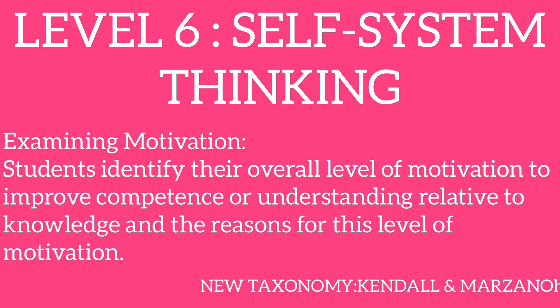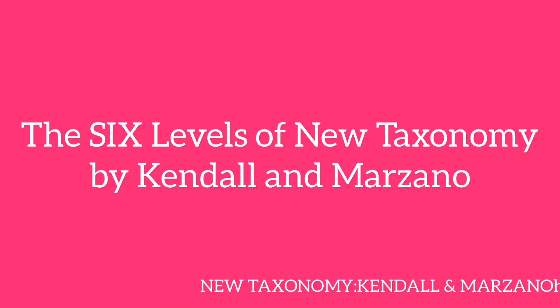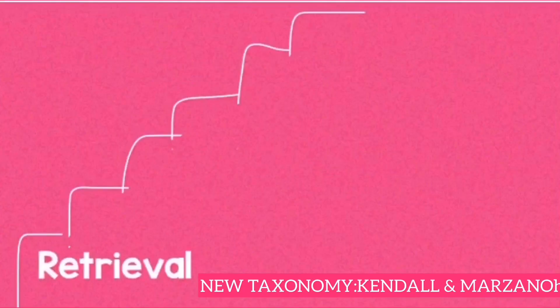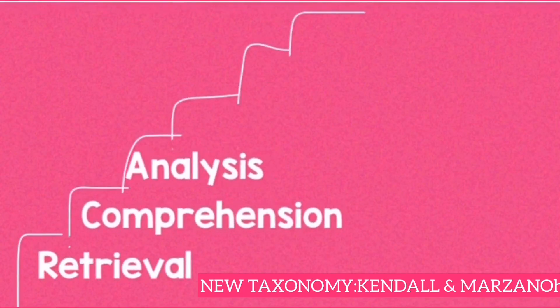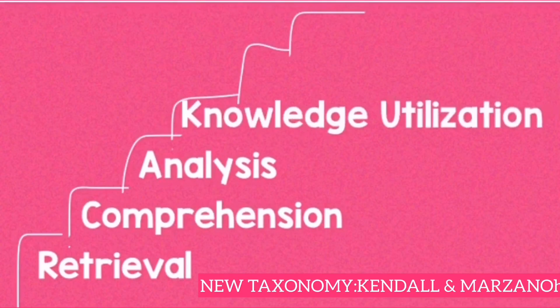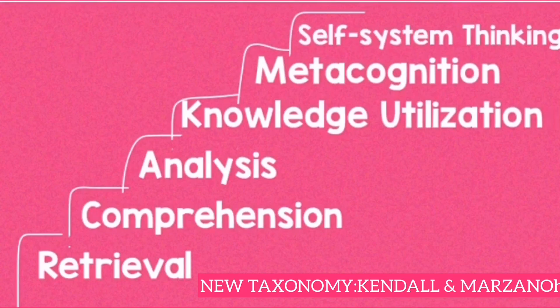To recap, the six levels of the New Taxonomy by Marzano and Kendall are: retrieval, comprehension, analysis, knowledge utilization, metacognition, and self-system thinking.